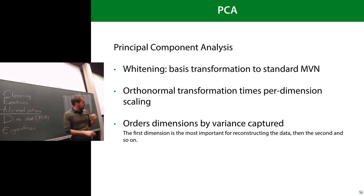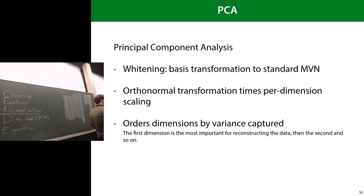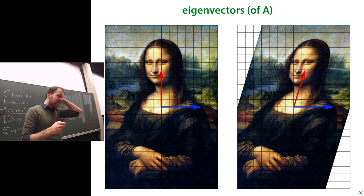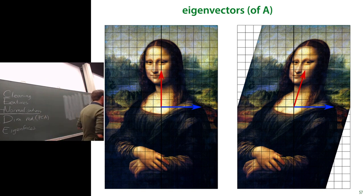We'll see later why maximizing captured variance helps retain as much information as possible. First, let's understand how PCA works, and for that I need to explain eigenvectors. A transformation multiplies a vector by a matrix. If you look at all vectors in a plane under a transformation A, it stretches the plane in some direction, maybe rotates or flips it.